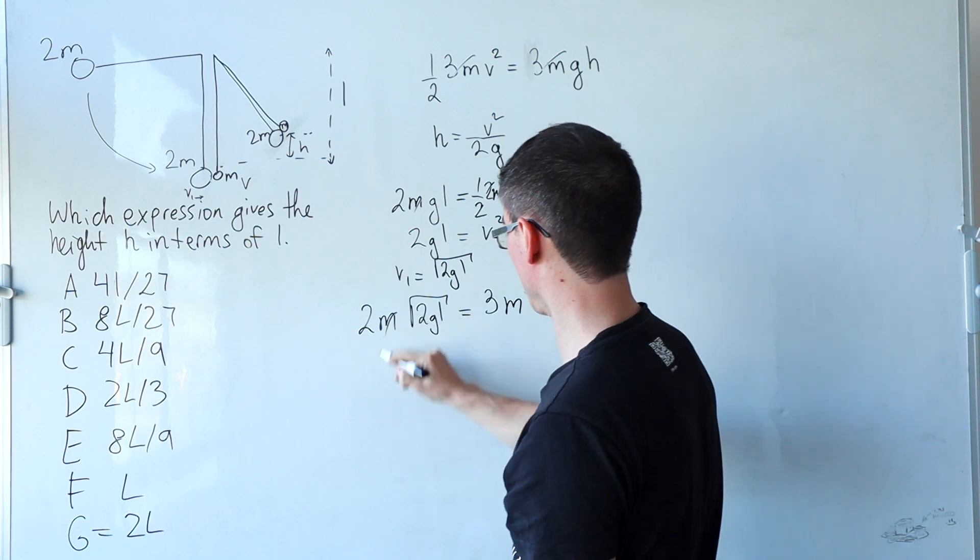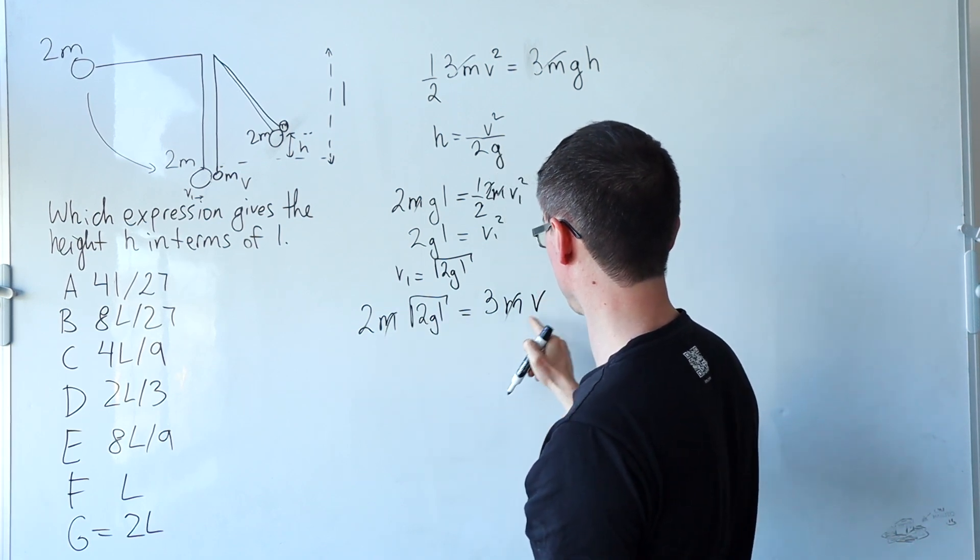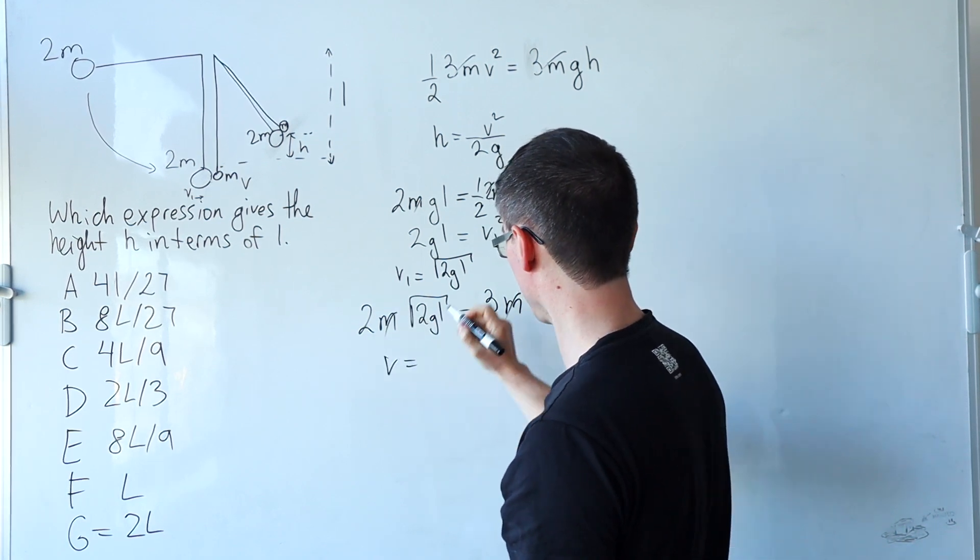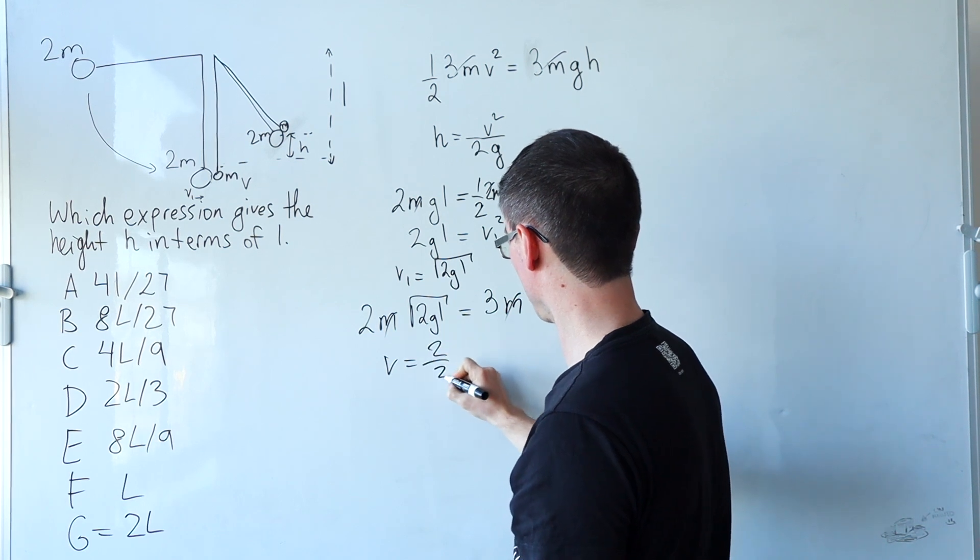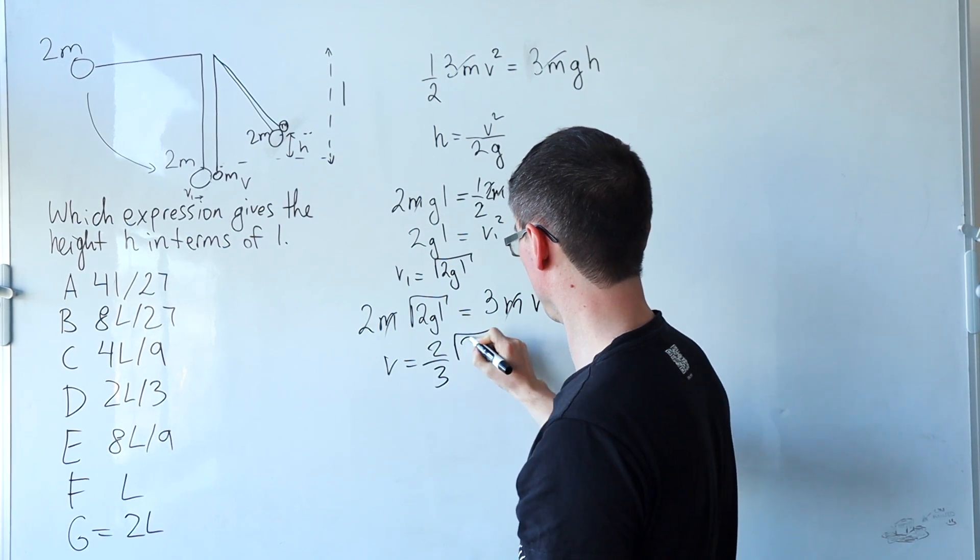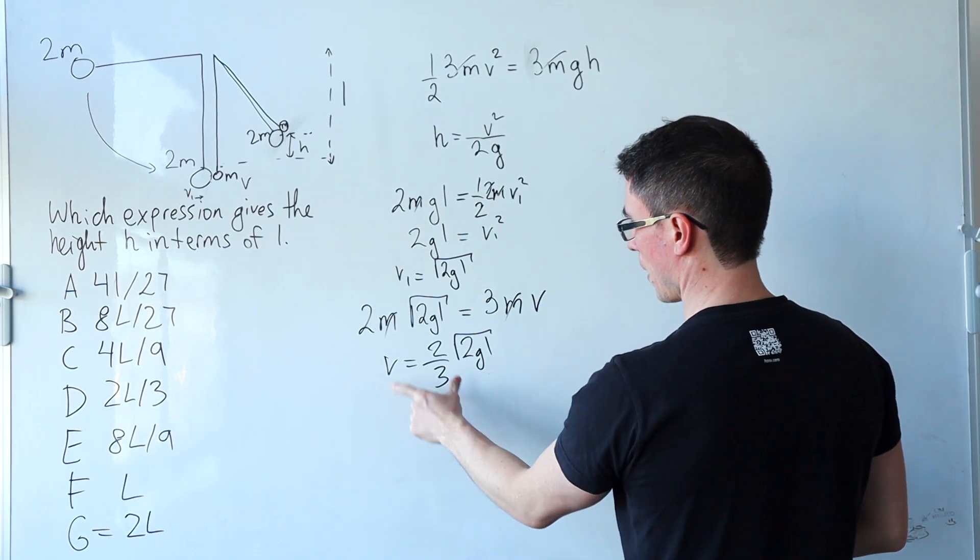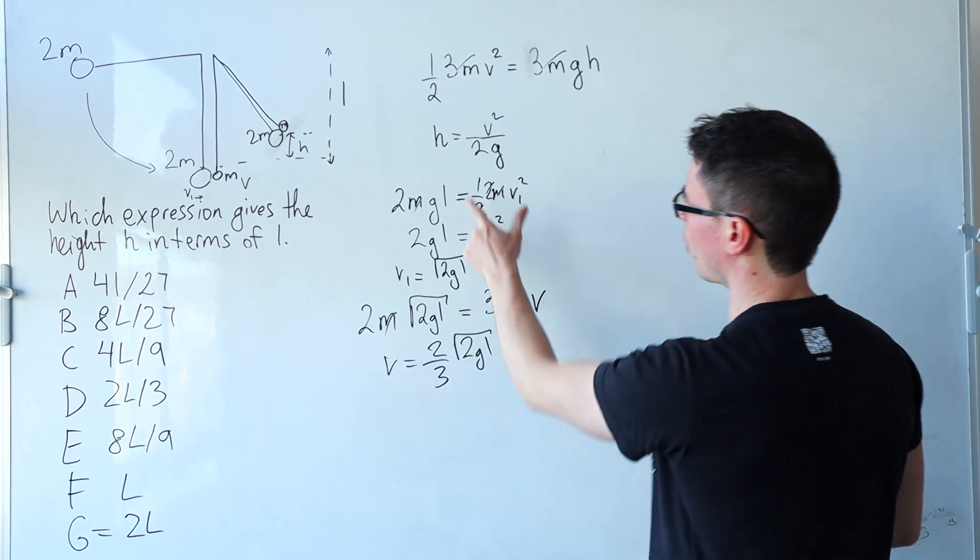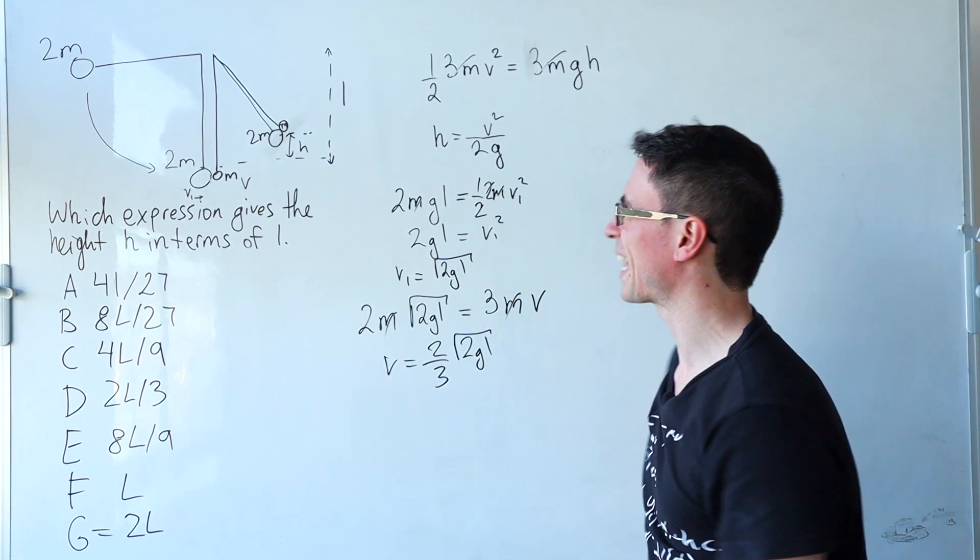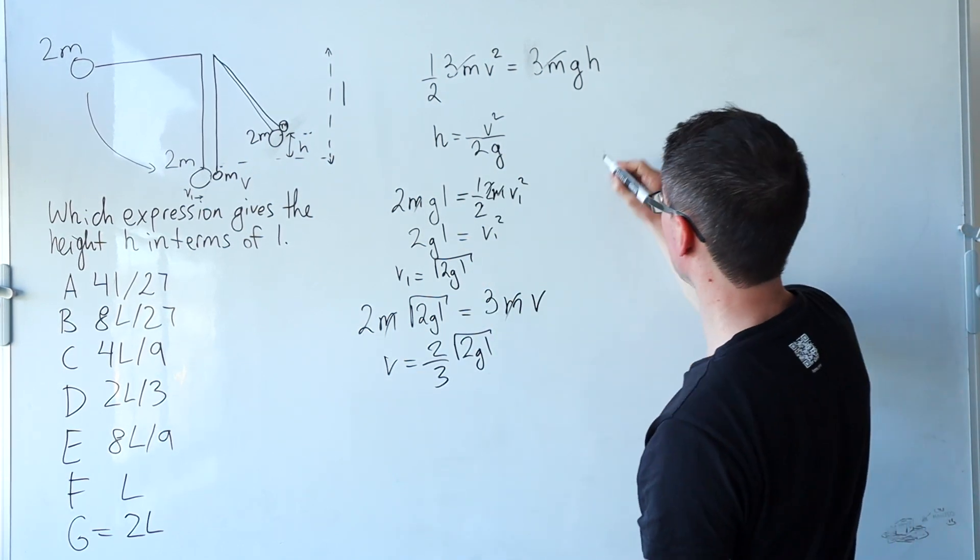Okay, so let's just rearrange for V. We can get rid of this mass, which will just be 2 over 3 root 2GL. Okay, we have this expression for the speed. So hopefully we should be able to just plug that in here and get the right answer.